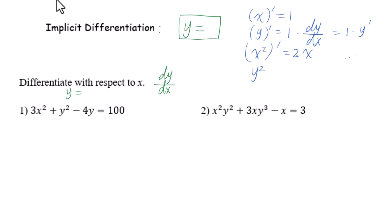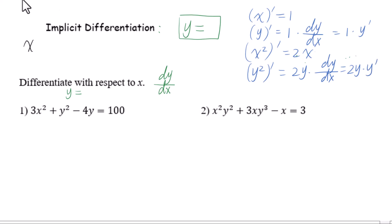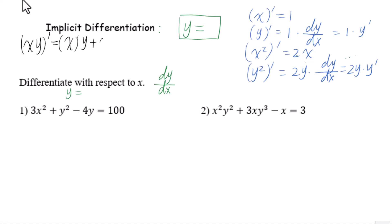For x² prime, that equals 2x. But for y² prime, you will get 2y times dy/dx, or 2y times y prime. If we have the derivative of xy, remember you will use the product rule: x prime times y plus x times y prime, which gives y plus x times dy by dx.